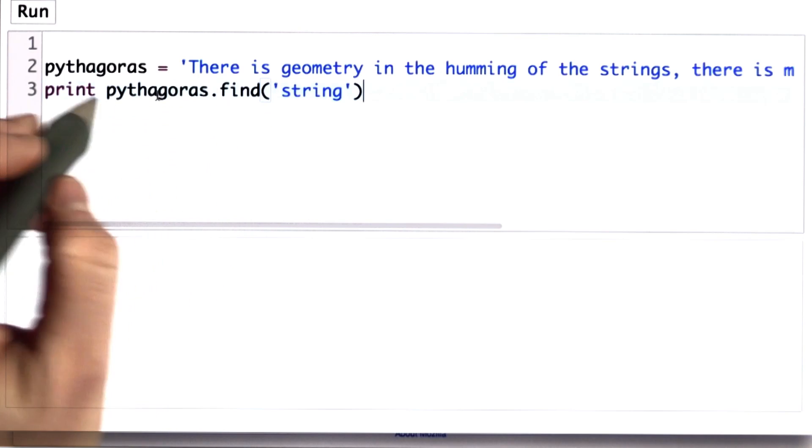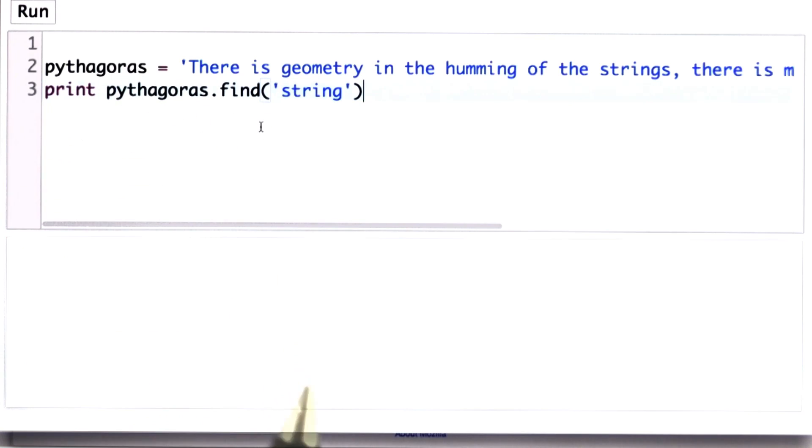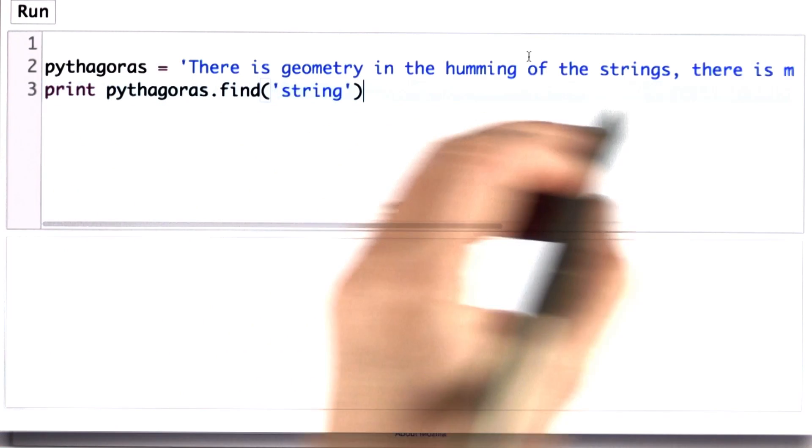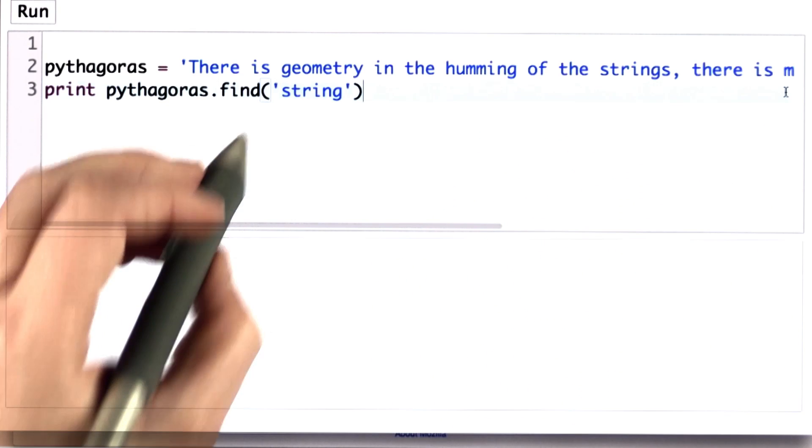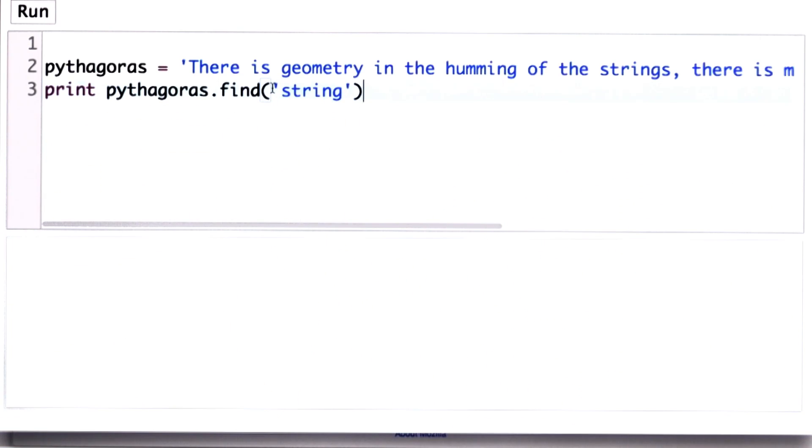So now we have that variable initialized. So I'm going to invoke find using Pythagoras as the string that we're searching in, and that's the value that we initialized it to with the string. Passing in as the search string, the string string. When we run this, we see that we get 40 as the result.